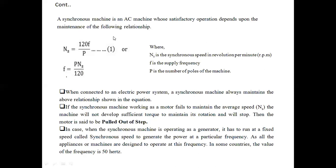When connected to an electrical power system, a synchronous machine always maintains the synchronous speed relationship. If a synchronous machine working as a motor fails to maintain average speed — meaning it doesn't develop sufficient torque — it will stop. This is called 'pull out of step.' The synchronous machine will run at synchronous speed irrespective of load; if load increases beyond bearable limits, the synchronous motor loses synchronism and is pulled out of step. The torque at that point is called pull-out torque. As a generator, it must run at synchronous speed to generate power at the required frequency.